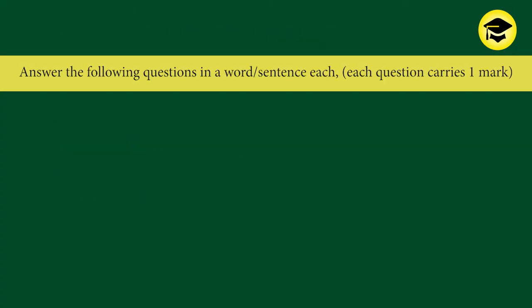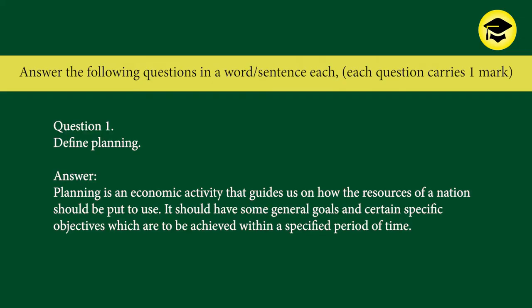Answer the following questions in a word or sentence — each question carries one mark. Question 1: Define planning. Answer: Planning is an economic activity that guides us on how the resources of a nation should be put to use. It should have some general goals and certain specific objectives which are to be achieved within a specified period of time.